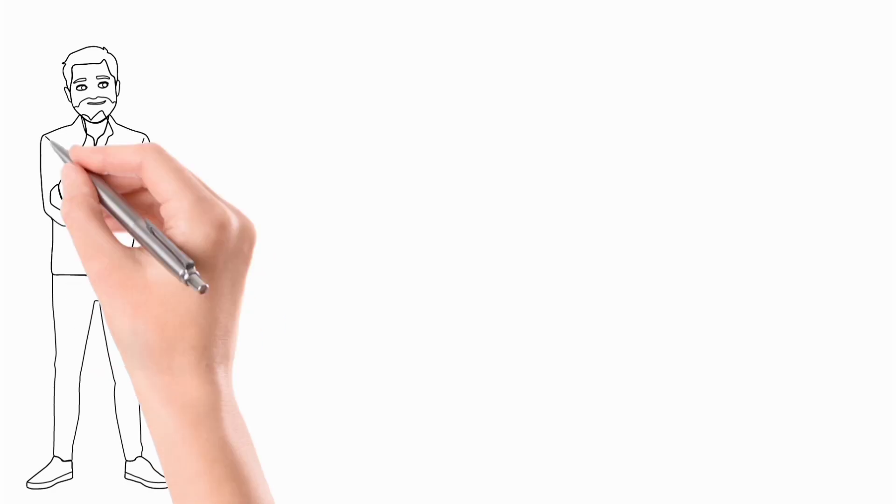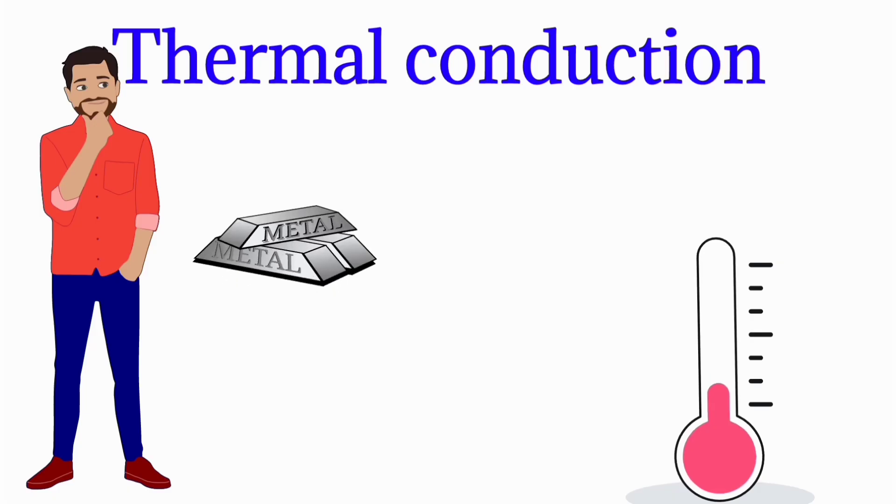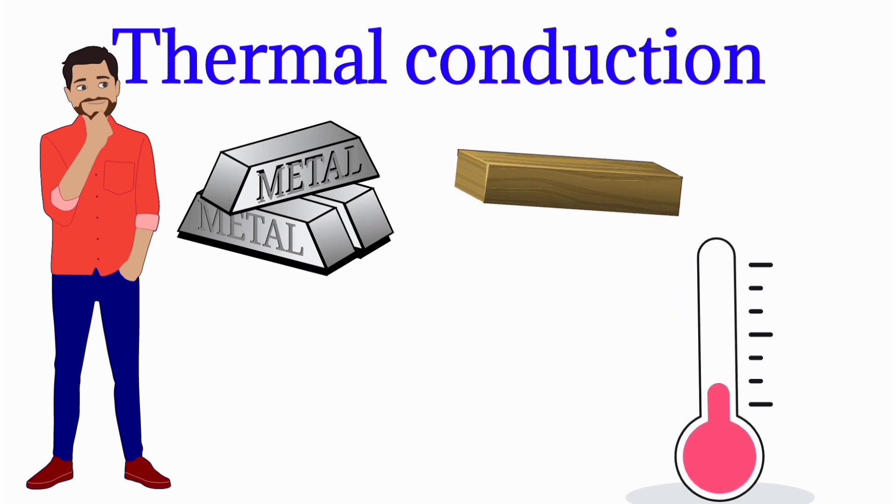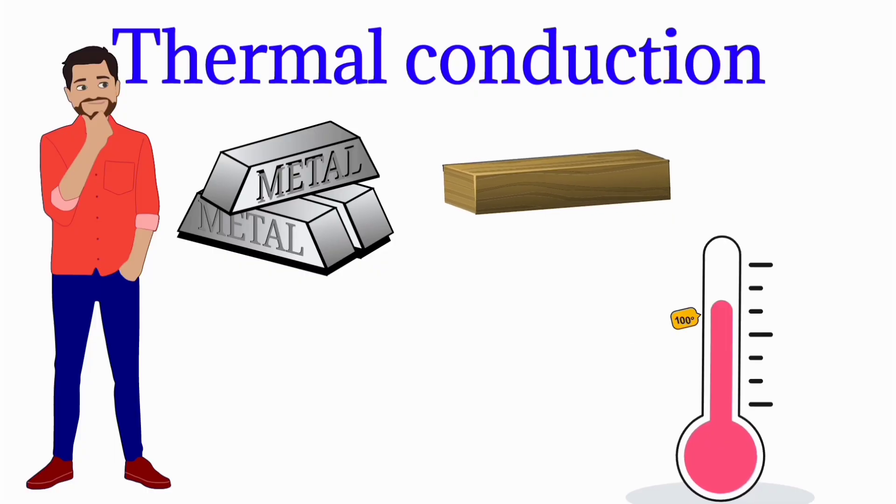But things are happening just the opposite. The only answer for this is thermal conductivity. The metals are good thermal conductors than wood. Iron conducts heat lot faster than wood. That's why ice melts first.